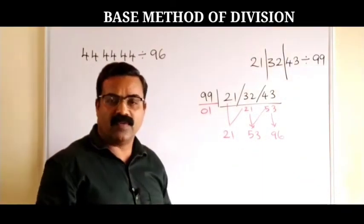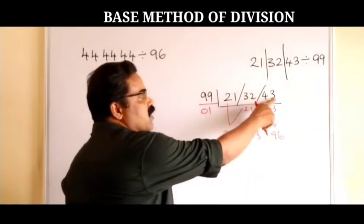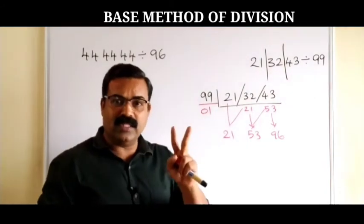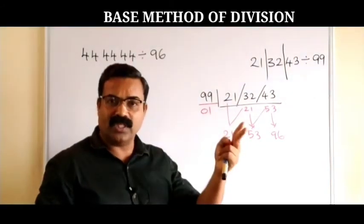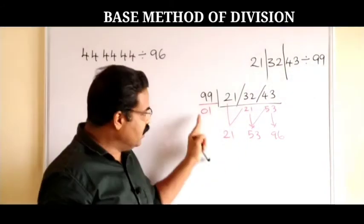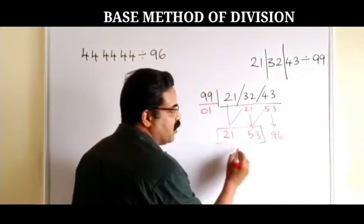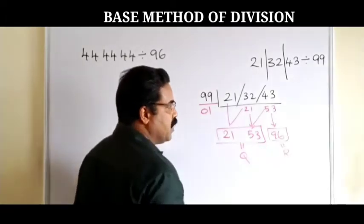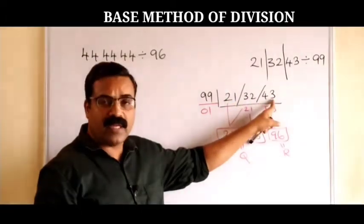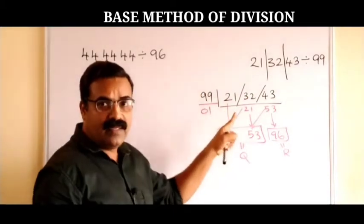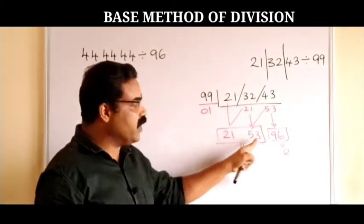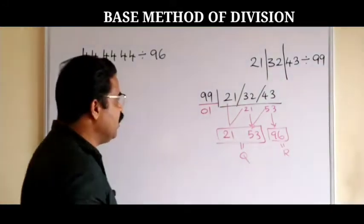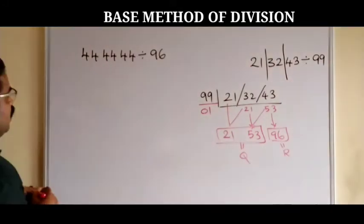When you write your answer it is over. Whenever a number is divided by another number, the two things we need to find out are the quotient and the remainder. In this case the first part is the quotient and the last part is the remainder. So when 213243 is divided by 99, we get 2153 as the quotient and 96 as the remainder.